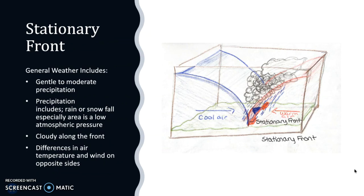Next we have the stationary front. This usually produces gentle to moderate precipitation, which can be in the form of rain or snowfall if the area is under low atmospheric pressure. It will usually be pretty cloudy along the front, and the differences in air temperature and wind are on opposite sides.